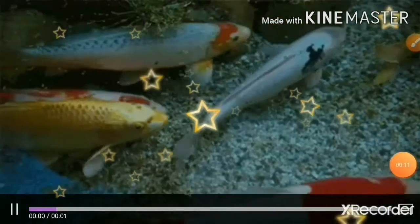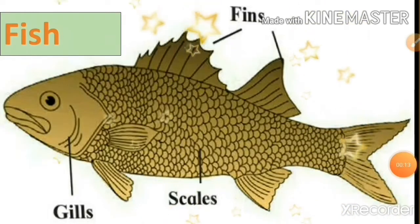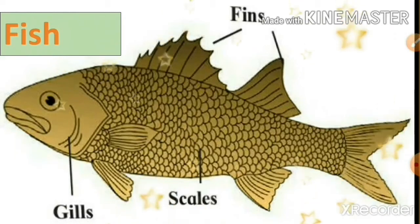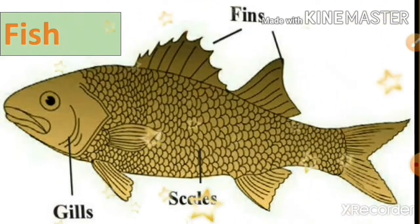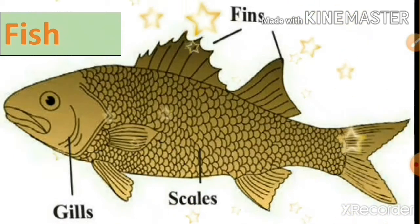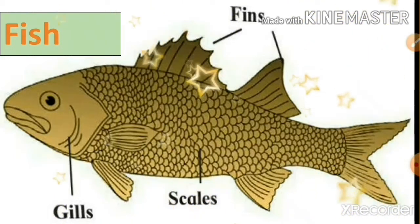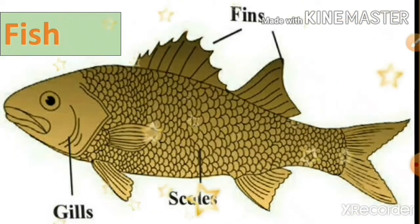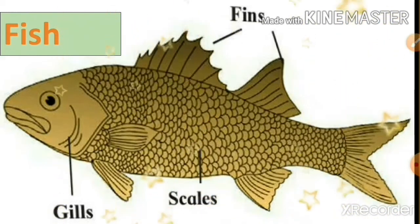Fishes are aquatic animals. Fishes have scales on the skin and fins on the body. Their body tapers towards both its ends like a spindle. Fish breathe with gills instead of a nose. Their eyes have transparent eyelids. They have air bladders within the body to help them float.